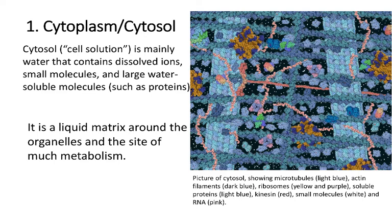So there are two terms that sometimes students find confusing: cytoplasm and cytosol. Cytoplasm means cell stuff. Cytosol means cell solution. So the cytosol is water with dissolved monomers, other small molecules, ions, and certain water-soluble proteins. The cytoplasm includes the cytosol as well as the cytoskeleton. And in this image, what we're looking at are primarily cytoskeletal proteins, as well as some of the large proteins that are dissolved in the cytosol.